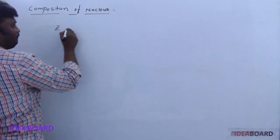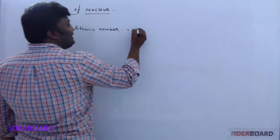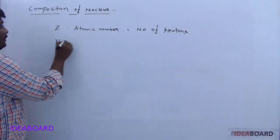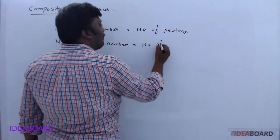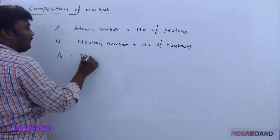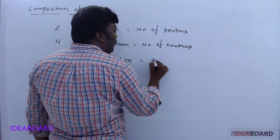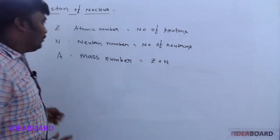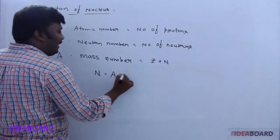You should remember certain terms. Z indicates the atomic number, which gives the number of protons present in the nucleus. N is the neutron number, which gives the number of neutrons present inside the nucleus. A is the mass number, which indicates the total number of protons and neutrons inside the nucleus. So A is nothing but Z plus N, and the number of neutrons is A minus Z.